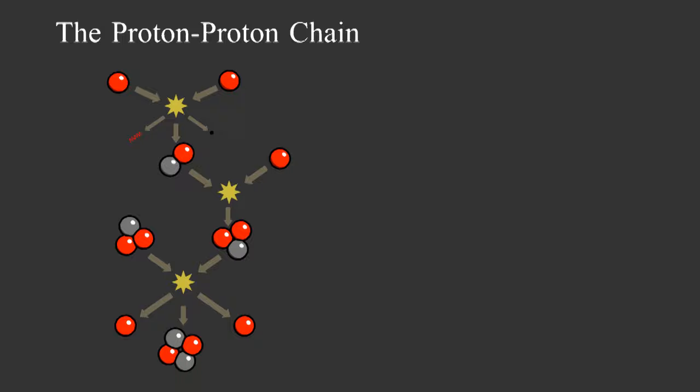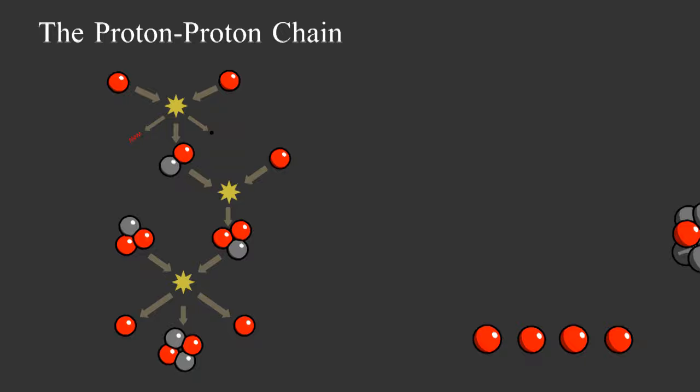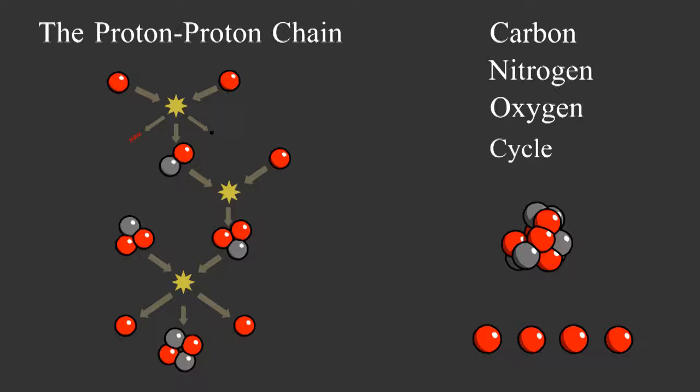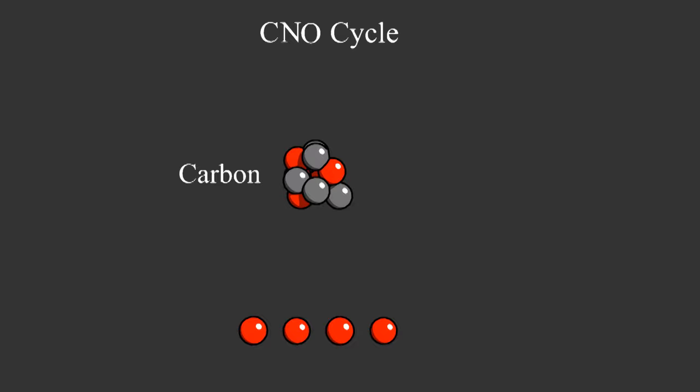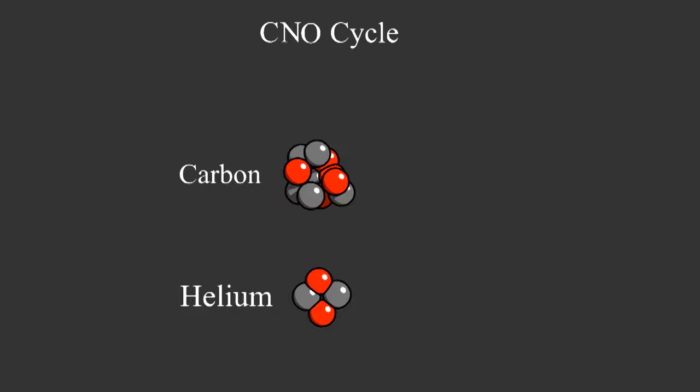The proton-proton chain is how the sun converts hydrogen into helium. But heavier stars have a different way of doing this. It's called the carbon-nitrogen-oxygen cycle or just CNO. We start with one carbon nucleus and four protons. We'll end up with one carbon nucleus and one helium nucleus.